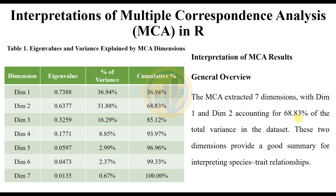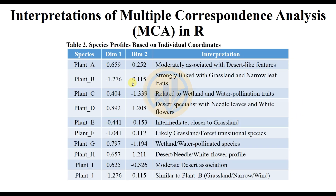Those two dimensions provide a good summary for interpreting species trait relationships. Table 2 shows species profiles based on individual coordinates, with species A through J listed with their Dimension 1 and Dimension 2 values. Plant A (0.659, 0.252) is moderately associated with desert-like features. Plant B is strongly linked with grassland and narrow-leaf traits. Plant C (Dim 1: 0.404, Dim 2: -1.339) is related to wetland and water-pollinated traits.